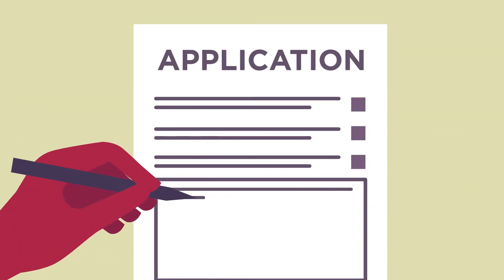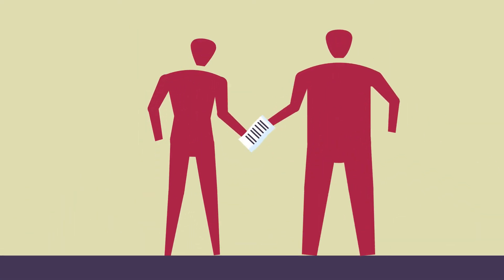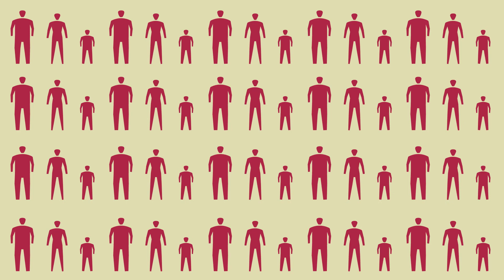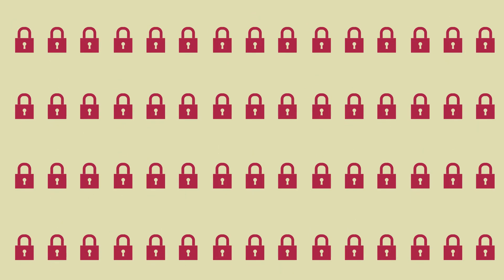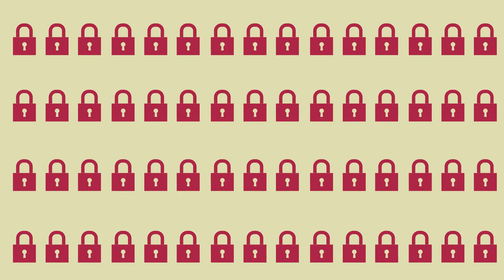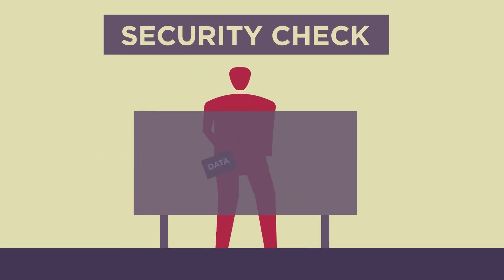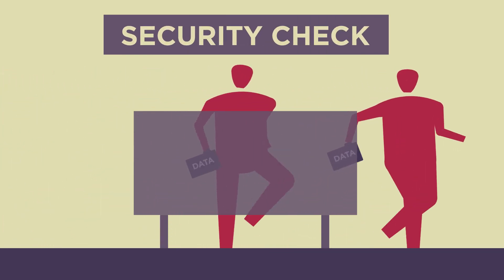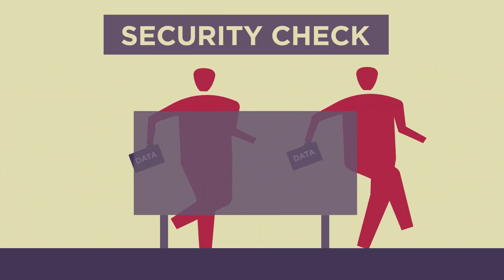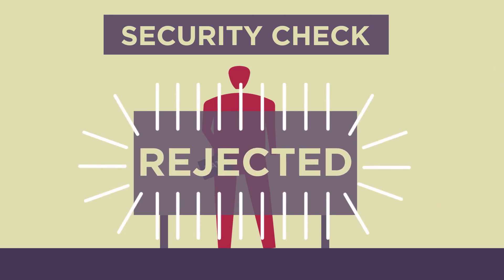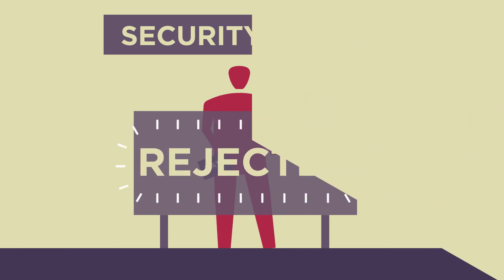Researchers need to apply for access to the routine data. They have to explain why they need the data to the data providers, how it will benefit the public, and show that they will hold the data securely and only use it for the purpose stated. Strict rules must be followed to ensure only approved researchers use the data. Only then can researchers access the routine data they require for their research.